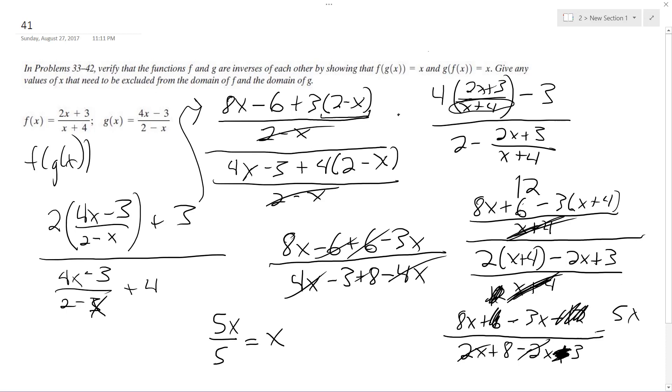Alright, so this becomes 5x over 5 and it just becomes x. Okay, that proves that these are inverses of each other.